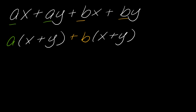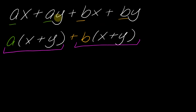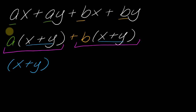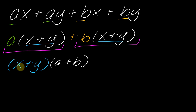Now look at what I've done here — this is kind of a trick of the eyes. I've got just these two terms now: 'a' times this thing, and 'b' times this thing. So what do these two terms now have in common? What they have in common is actually the x plus y. Both of these now have the x plus y — it's the same thing in the parentheses. So I can actually factor the x plus y out of this entire expression. If I factor out x plus y, what am I left with? I'm left with a plus b. And we have factored this expression.